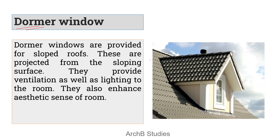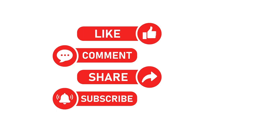Next is the dormer window. Dormer windows are provided on the sloped face of the roof — they project from the sloping surface and provide ventilation as well as lighting. That was the last window type. If you learned something from this video, please like, comment if you have any queries, share with friends studying architecture or preparing for architecture entrance examinations, and make sure to subscribe to this channel.